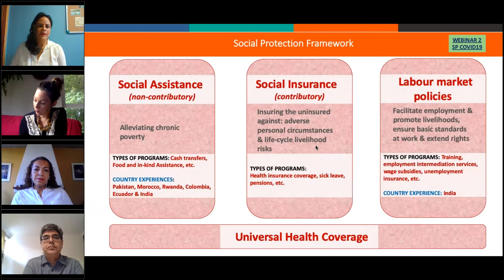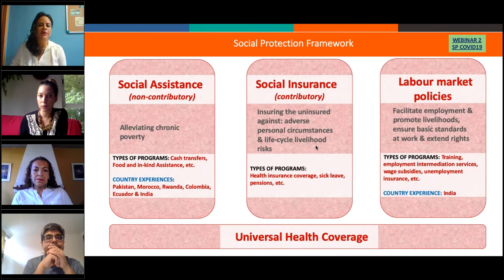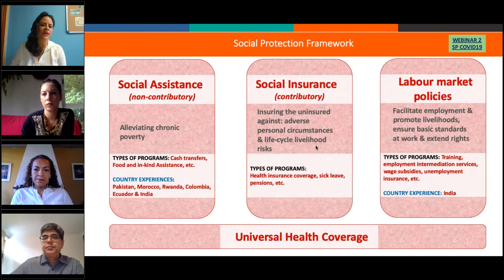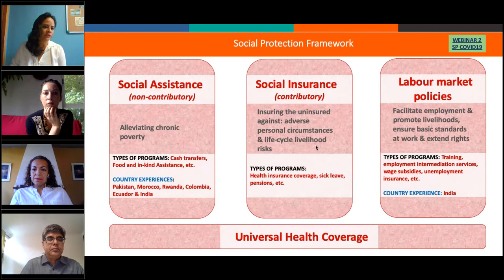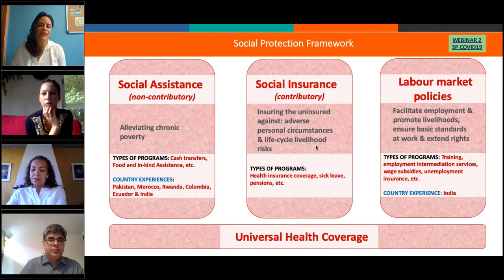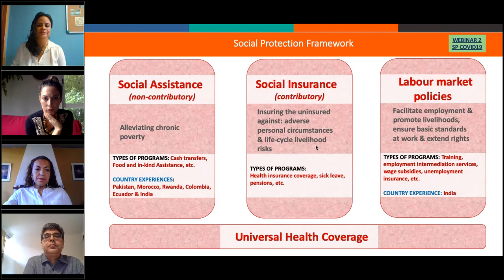Continuing with the social protection framework explored in this webinar series, we visualize social protection around key pillars. These webinars have primarily focused on emerging practices covering social assistance — primarily cash transfers, food, and in-kind assistance. On the June 16th webinar, we had experiences from Pakistan, Morocco, Rwanda, and Colombia. Today we will explore Ecuador and India, and also labor market policies promoting livelihoods, which is primarily the India case. We wanted to place the emerging practices we are highlighting within this framework of social protection.